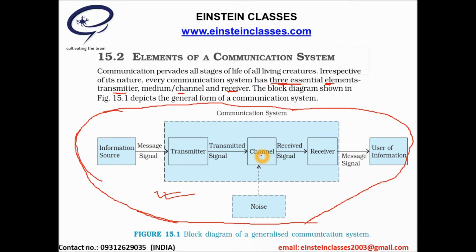When the message signal passes through the channel, there will be some unwanted signal that disturbs the transmission — this unwanted signal is called noise. The channel may be in the form of wires or cables connecting the transmitter and receiver. The purpose of the transmitter is to convert the message signal from the information source into a suitable form that can be transmitted through the channel.